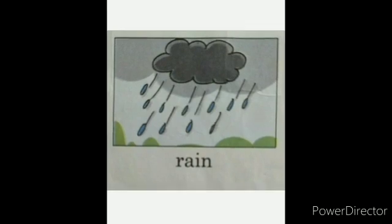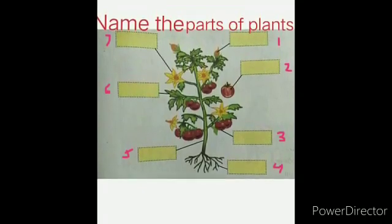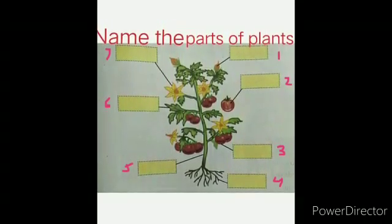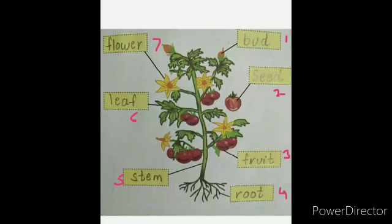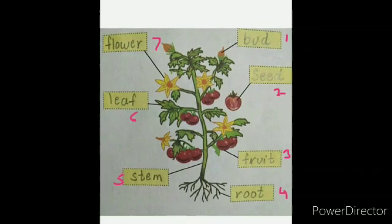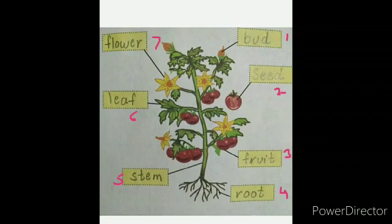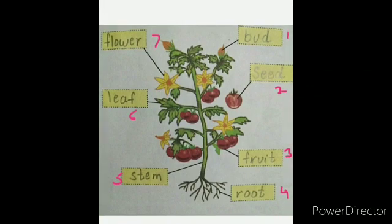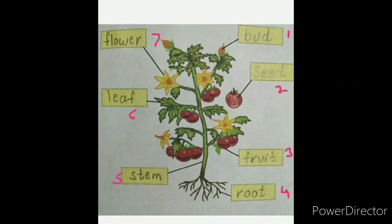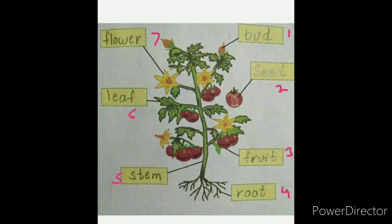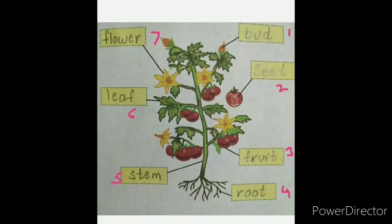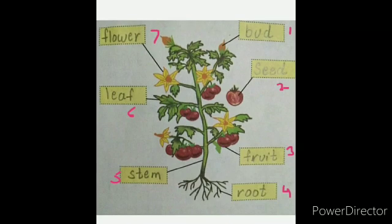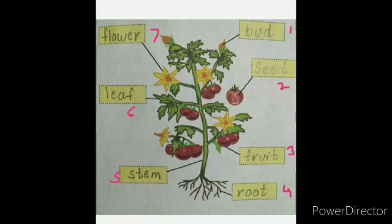Now we will do one exercise: Name the parts of the plants. They have given you seven parts labeled one through seven, and you have to write the answers. What is the first one? It is a bird. The second one is seed. Third one is a fruit. The fourth one, it is down, it is root. The fifth one is stem. The sixth one is a leaf. Leaf means one and leaves means too many. And the seventh and last one is flower. Please label these in your workbook and notebook.